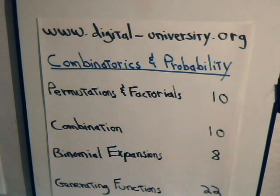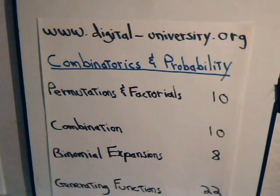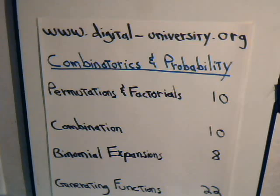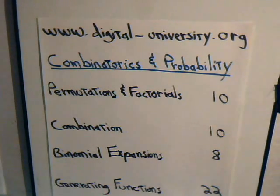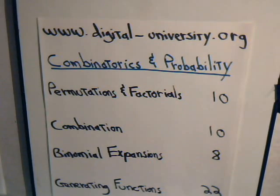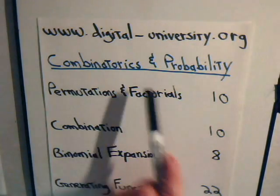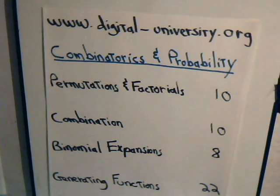This is video probability problem number 10 from Digital Dash University. In this video and in the next three videos that follow, we're going to consider Bernoulli type probability problems. We'll be referring to results obtained in earlier videos pertaining to combination and permutation problems, especially permutations with repeats. If you're not familiar with those, visit digital-university.org and click on the Cognitorics and Probability section to access all the earlier videos.